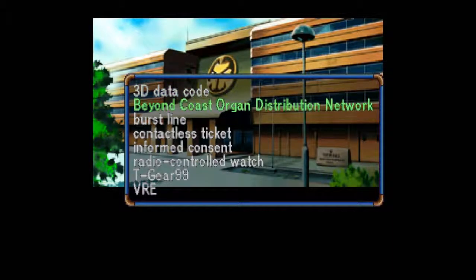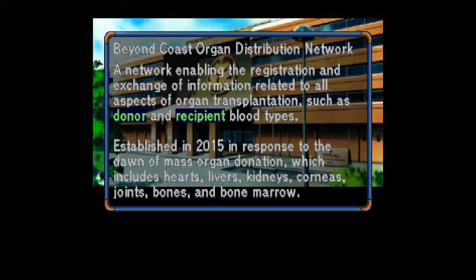Beyond Coast Organ Distribution Network — BCODN. A network enabling the registration and exchange of information related to all aspects of organ transplantation, such as donor and recipient blood types, established in 2015 in response to the dawn of mass organ donation, which includes hearts, livers, kidneys, corneas, joints, bones, and bone marrow.